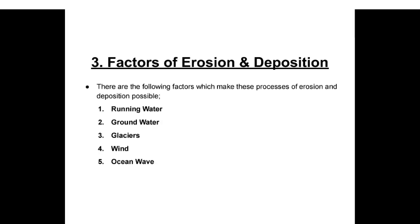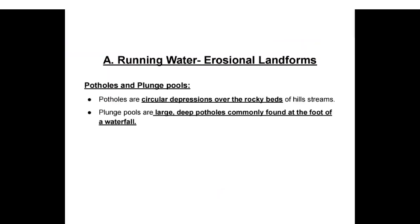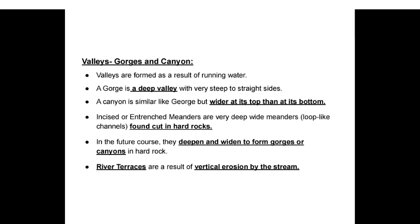Factors of erosion and deposition include running water, groundwater, glaciers, wind, and ocean waves. Running water erosional landforms: potholes are circular depressions over rocky beds of hill streams; plunge pools are large deep potholes found at the foot of a waterfall. Valleys, gorges, and canyons are formed by running water — a gorge is a deep valley with very steep to straight sides, a canyon is similar but wider at its top than bottom. Incised or entrenched meanders are very deep, wide, loop-like channels found in hard rocks. River terraces are a result of vertical erosion by the stream.